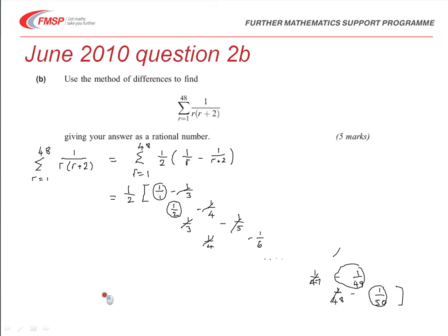So, all told, what we now have is going to be a half of (1 + 1/2 - 1/49 - 1/50).